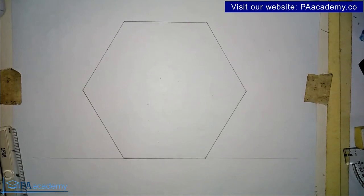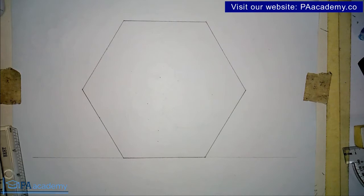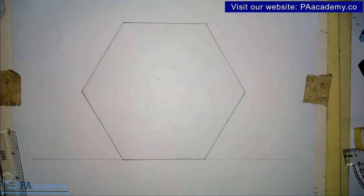Hello everyone and welcome to PA Academy. In this video I'm going to show you how to draw equal circles inside a regular polygon such that each of those circles will be touching two other circles and one side of the polygon.